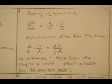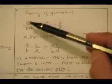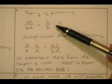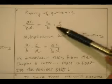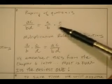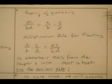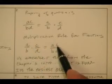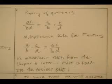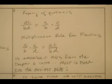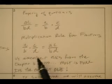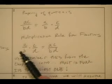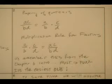Remember the property of quotients? That was old school. A times C over B times D can be written as A/B times C/D. So you just multiply across the top. Reverse that and you have the multiplication rule for fractions: when you multiply fractions, you find the product of the numerators and put it over the product of the denominators.